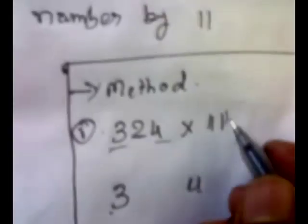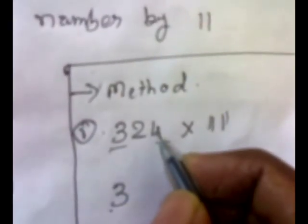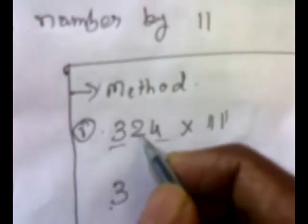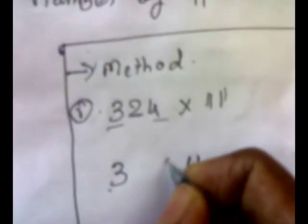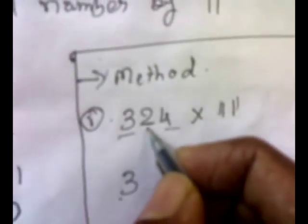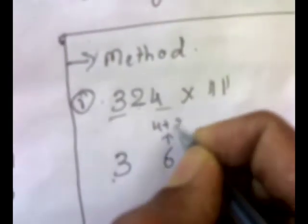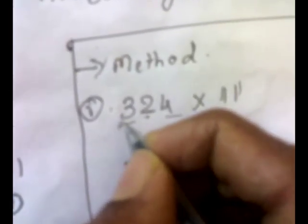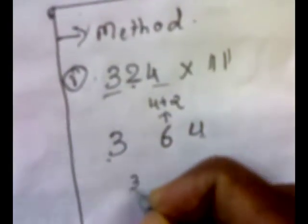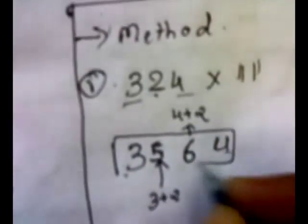Now we will first add these two digits. Start from the rightmost digit. The rightmost digit is 4, so we will add these two digits: 4 plus 2 is 6. We will put 6 here. Now we will add these two digits: 3 plus 2 is 5. So we get our final answer.